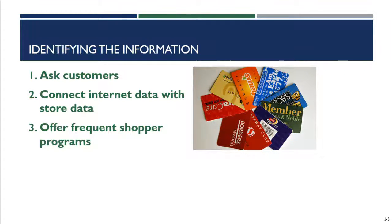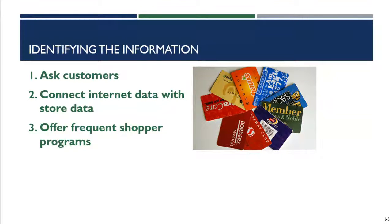A third way to collect information is to offer frequent shopper programs. Frequent shopper programs are fantastic for identifying and collecting information because every time you get a frequent shopper card, you have to fill out an information card and provide all your details. Often the card includes optional questions that consumers will fill out anyway. That loyalty program can also provide rewards for customers who patronize a retailer, but it's great for collecting data.